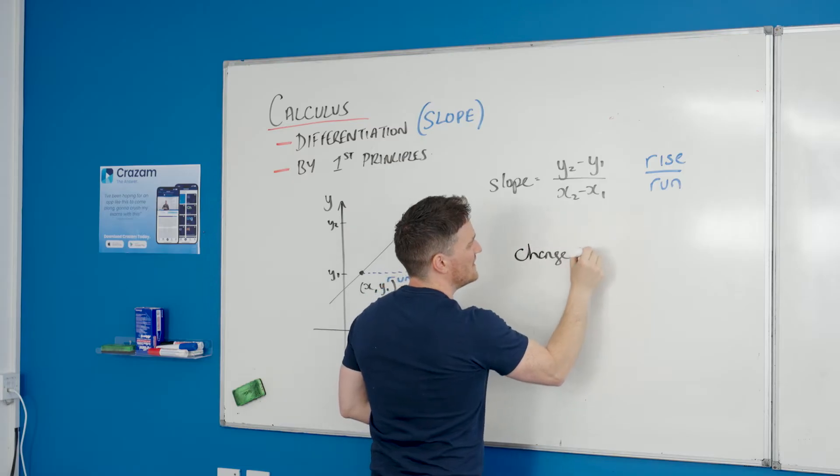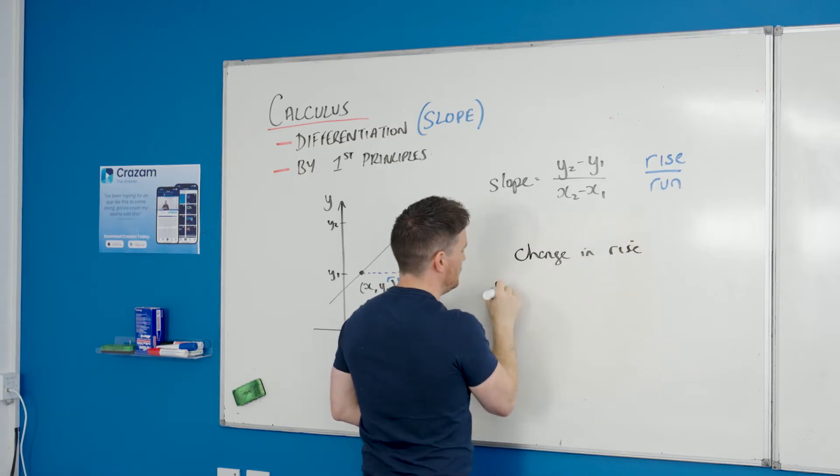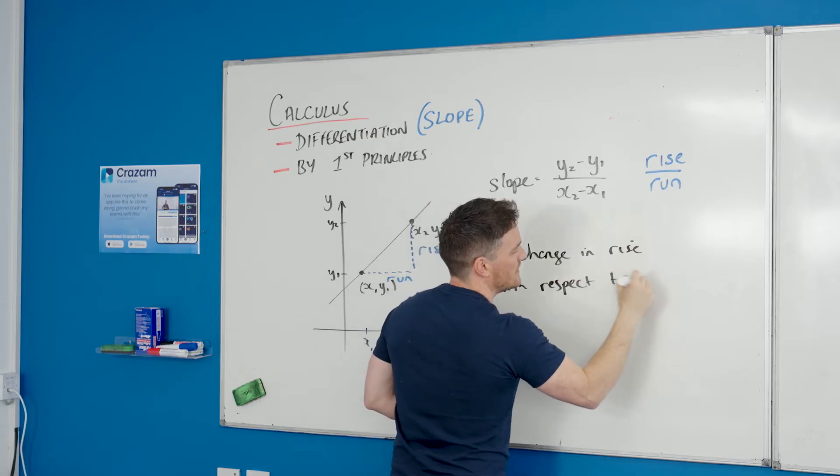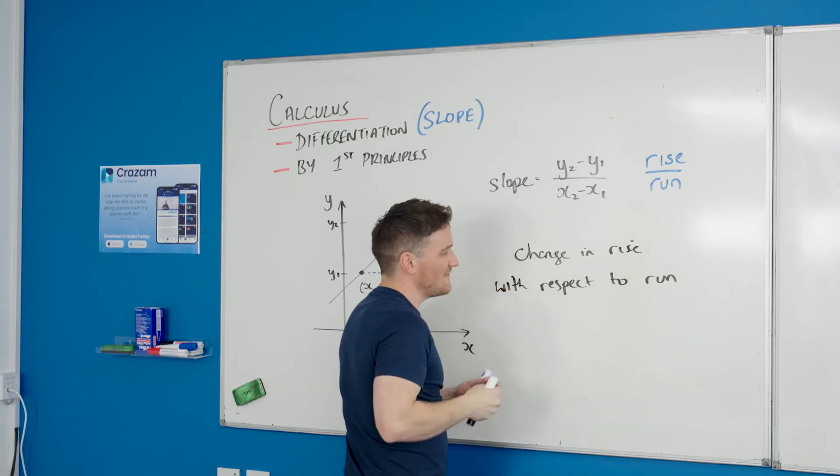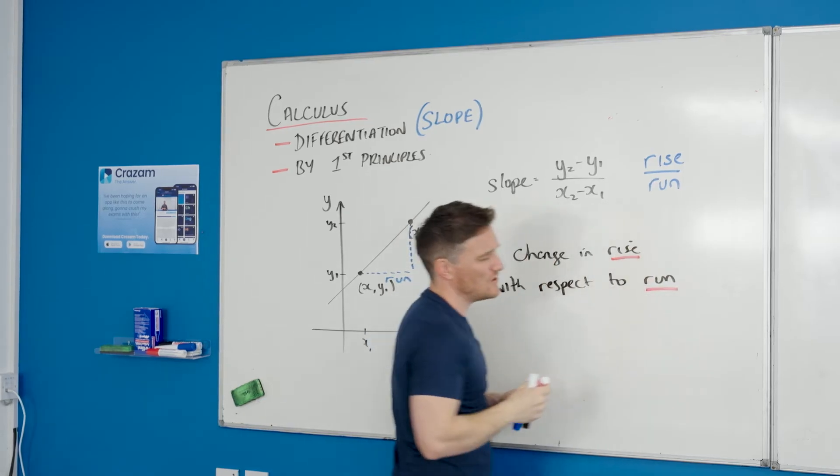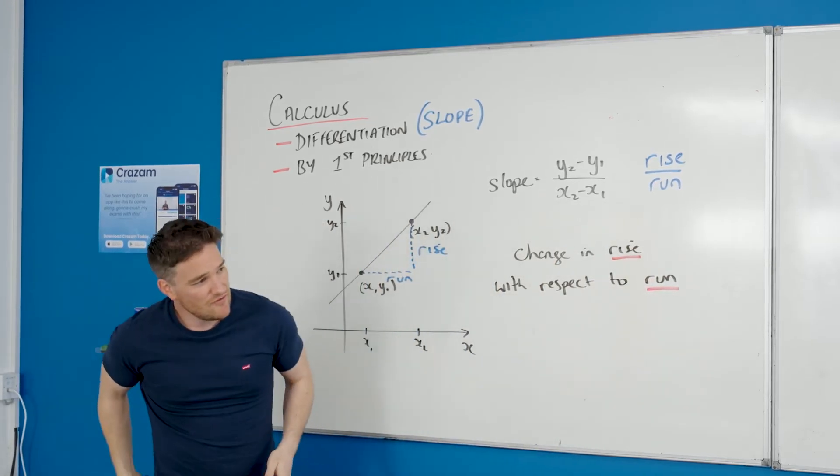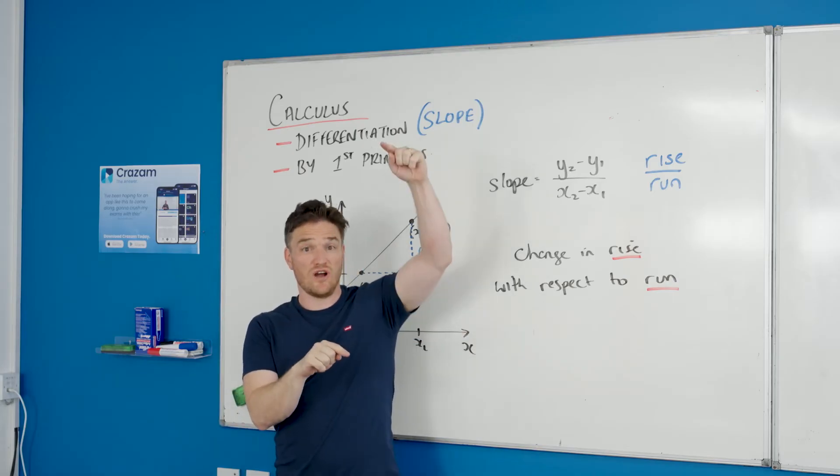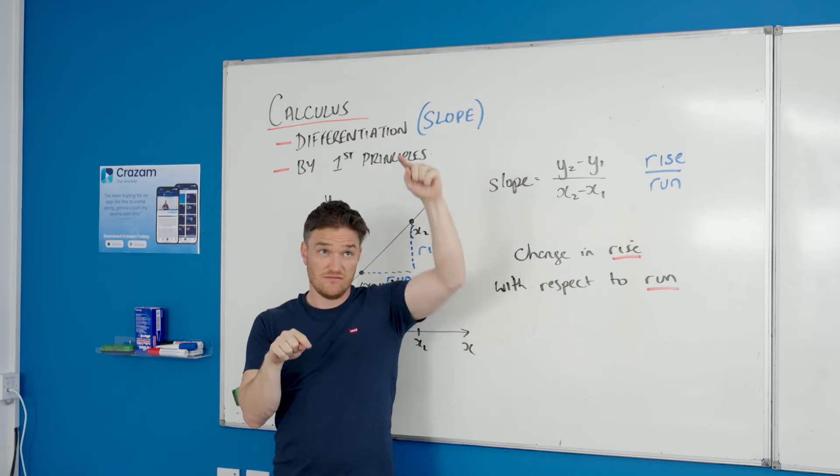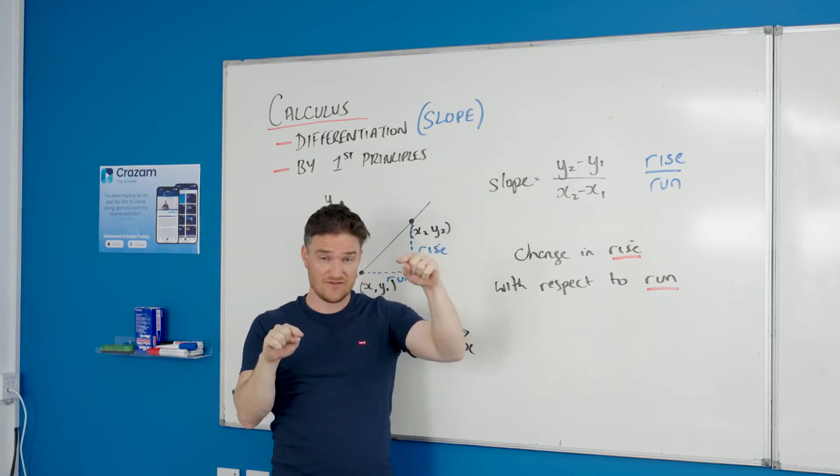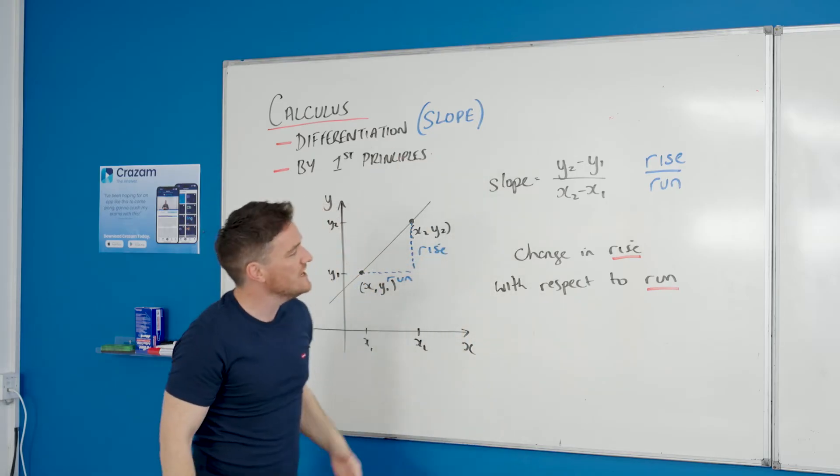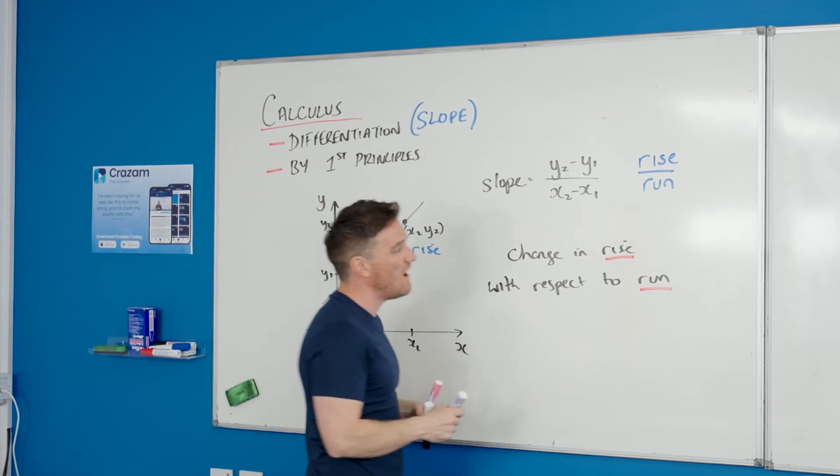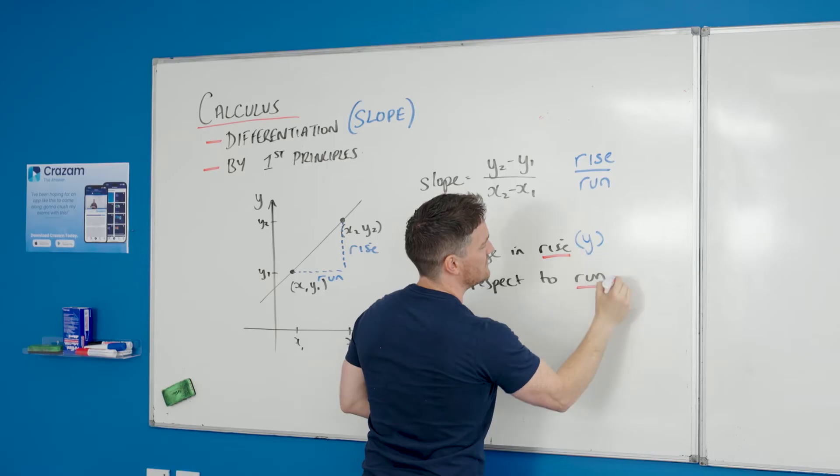So slope is the change in rise with respect to run. What I mean by that is if I take the same distance of a run and I have a greater rise with that run, then it's going to be steeper. If I had less of a rise, it's going to be less steep. So change in rise with respect to run, or another way of saying that is change in y with respect to x, where rise is y and x is run.